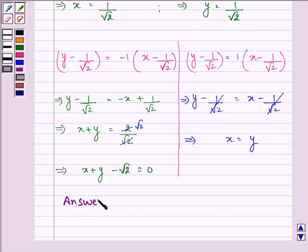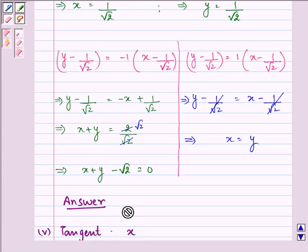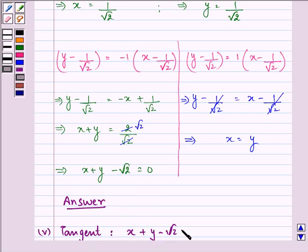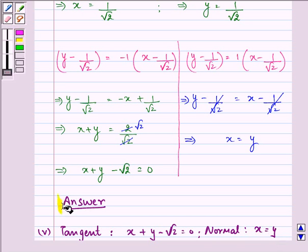So the answer to the final fifth part is for tangent, x plus y minus root 2 is equal to 0 and for normal it is x is equal to y. This completes our session. Hope you understood the whole concept. Do take care of your simplification and have a very nice day ahead.